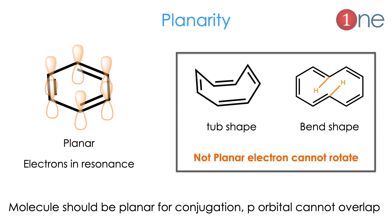Let us also see what planarity means. Planarity is very important because it helps the electrons revolve around. If it is non-planar, the p-orbital positions are different and electrons cannot rotate. The best example of a non-planar molecule is cyclooctatetraene as well as aniline systems. Here, due to geometry and steric effects, the molecule is not planar, so electrons cannot rotate. For aromaticity, the system should have planarity.